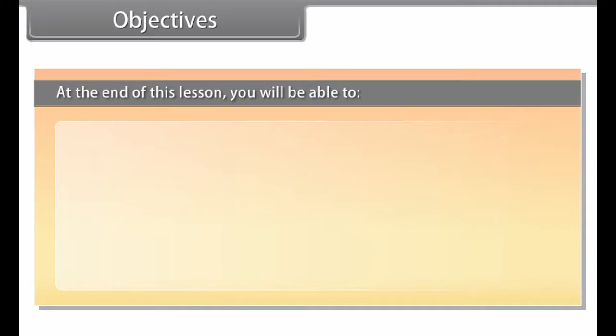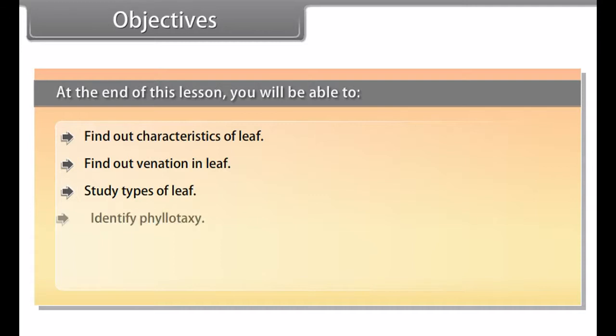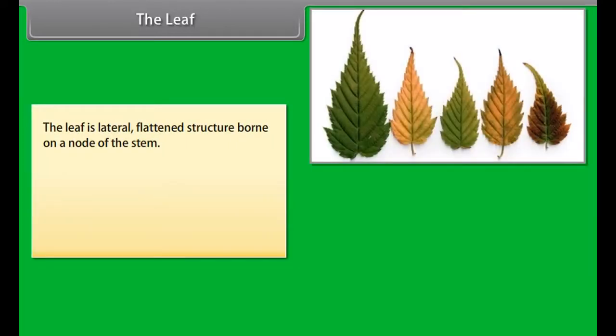Objectives: At the end of this lesson you will be able to find out characteristics of leaf, find out venation in leaf, study types of leaf, identify phyllotaxy, study modifications of leaf, and understand functions of leaf.